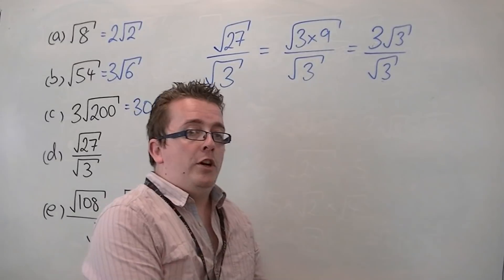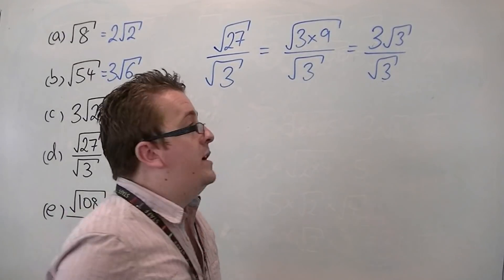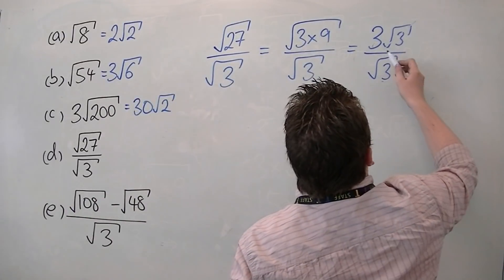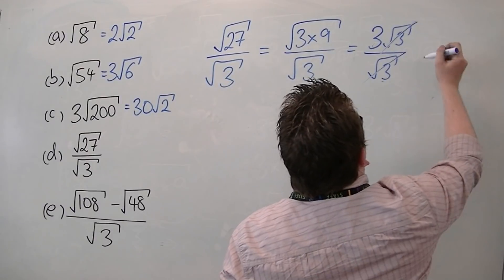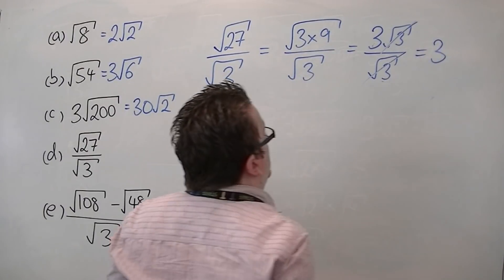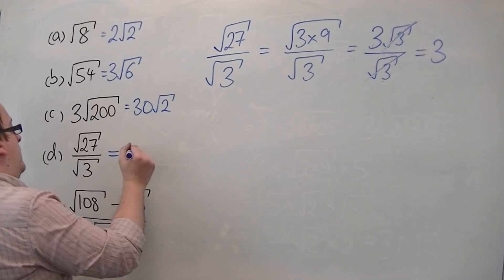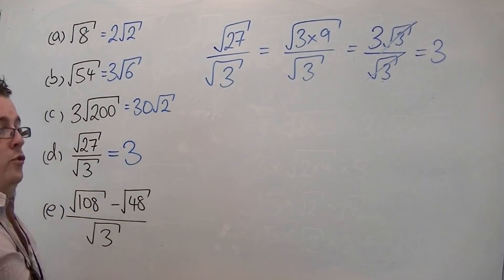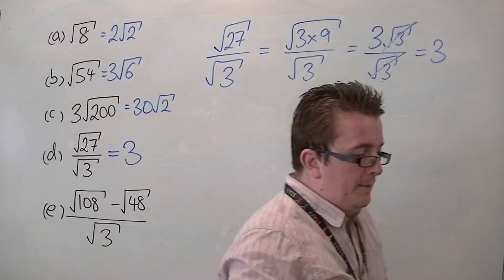Now, if you've got 3 times root 3 divided by root 3, the root 3s cancel each other out, and that just leaves you with 3. So this is just 3.